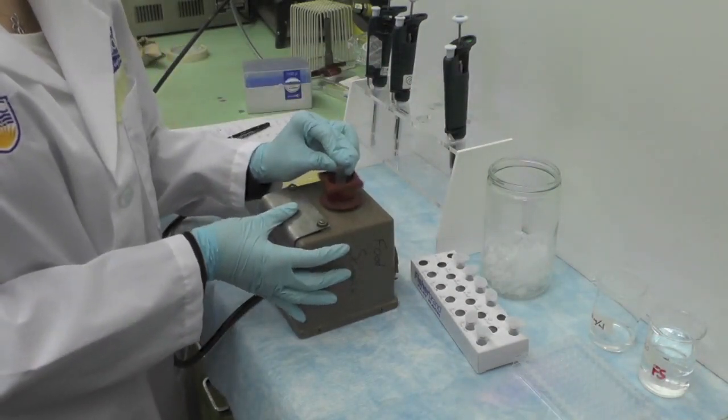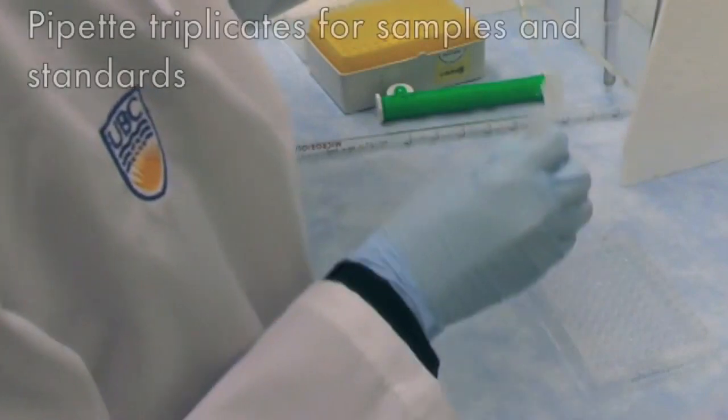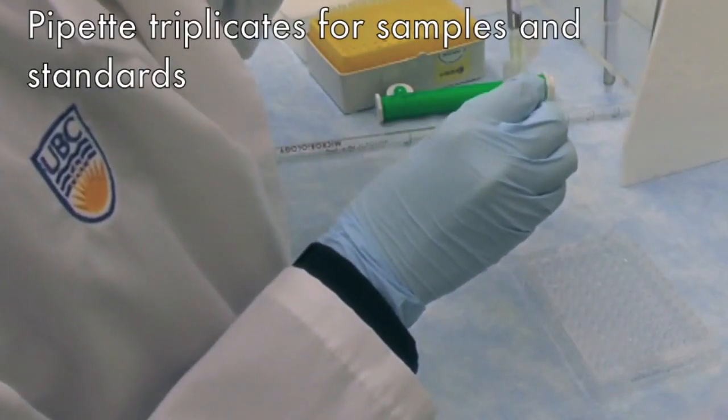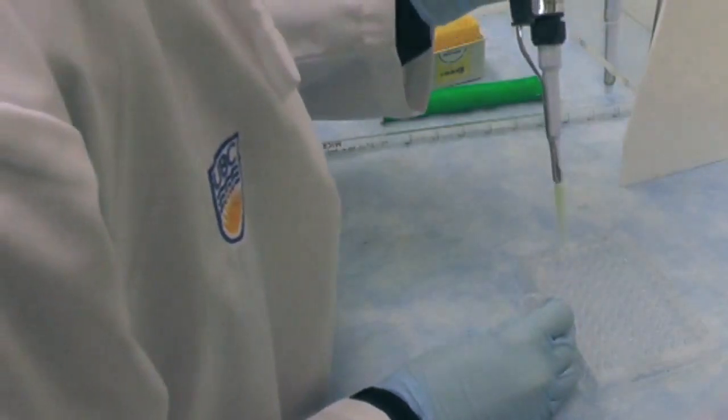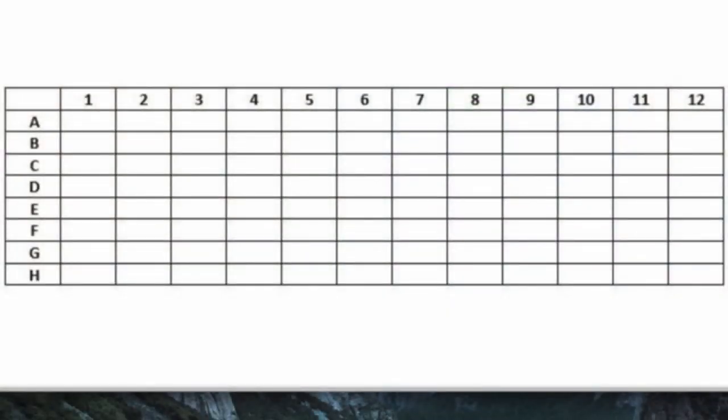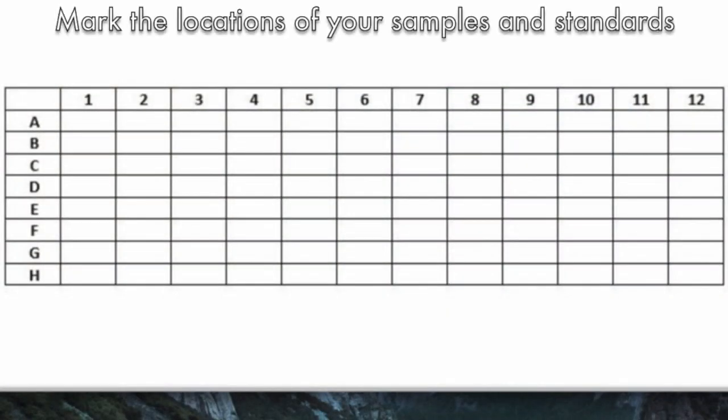Prepare all your standards and samples. Pipette 10 microliters of your standard solution and samples in triplicates into the microplate. Either print the microplate template that is provided on Connect or draw the template on your notebook. Record the location of each standard and sample within the well.